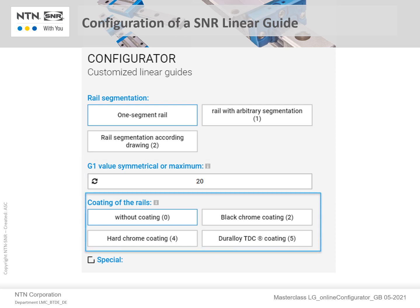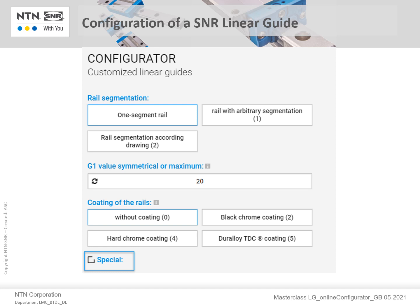If necessary, a coating of the rail can also be selected. As a last option, a special version of the rail can be specified based on a supplied drawing. This now completes the configuration of the rail.